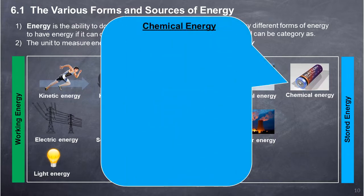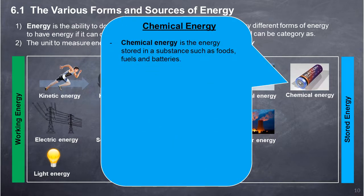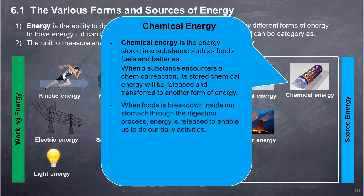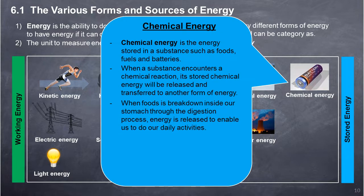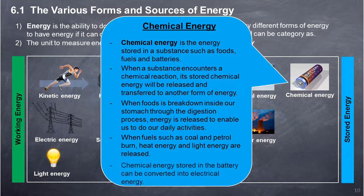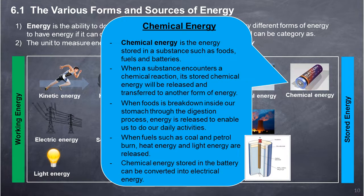Chemical Energy: Chemical energy is the energy stored in a substance such as foods, fuels, and batteries. When a substance undergoes a chemical reaction, its stored chemical energy is released and transferred to another form of energy. When food is broken down inside our stomach through digestion, energy is released to enable us to do daily activities. When fuels such as coal and petrol burn, heat energy and light energy are released. Chemical energy stored in a battery can be converted into electrical energy.